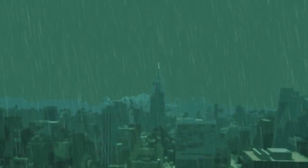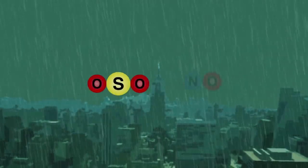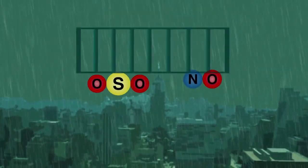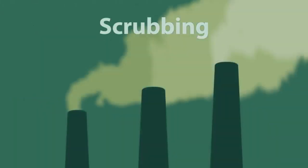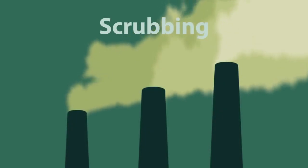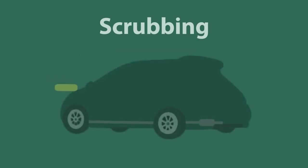So to summarize: the best way to reduce the effects of acid rain is to prevent the oxides of sulfur and nitrogen from escaping into the atmosphere in the first place. This is done by scrubbing the exhaust fumes from power stations using lime or seawater to remove the sulfur dioxide, and by fitting catalytic converters to motor vehicle exhausts to decompose the oxides of nitrogen.